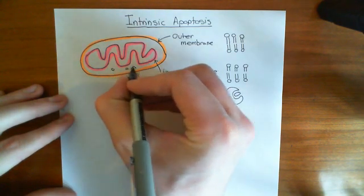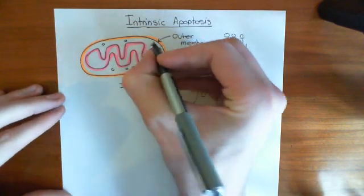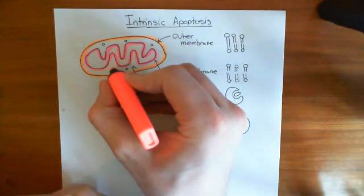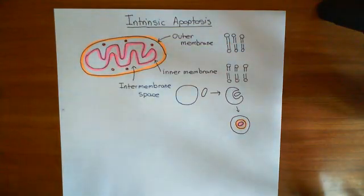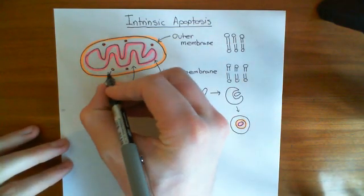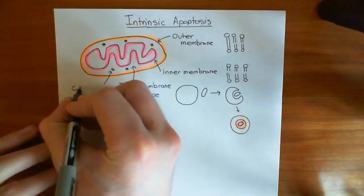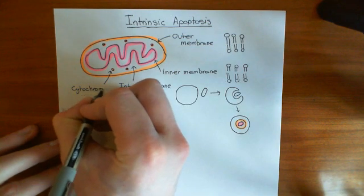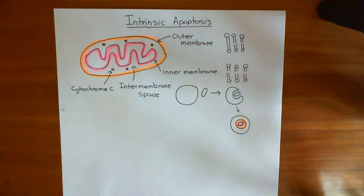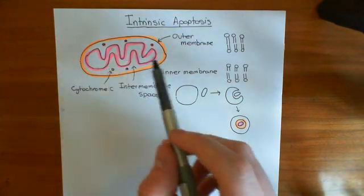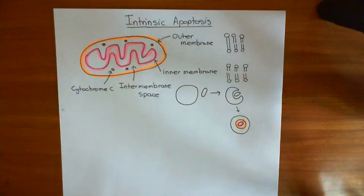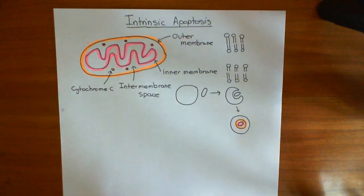Cytochrome C is in the intermembrane space here — I'll draw it as a little red dot. Cytochrome C is extremely important in the electron transport chain of respiration, which is why it's in the intermembrane space. But its other role is in triggering apoptosis. Because cytochrome C is absolutely only present in the intermembrane space, we can use cytochrome C leaving the intermembrane space and going into the cytoplasm as a signal for apoptosis — specifically, the activation of the caspases. We're going to see what causes cytochrome C to be released.